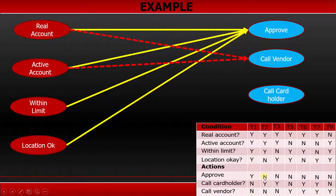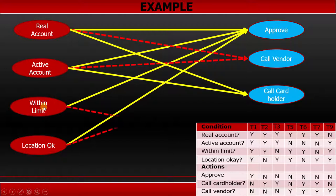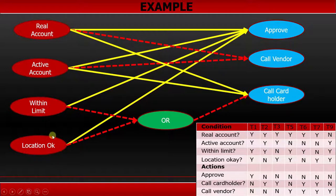And the last combination which is remaining is, if your account is real and if your account is active but you don't have the amount within limit and if you are not in the correct location, that means, or conditions, you are going to call the cardholder. So if you have a real account, active account but limit is not there or the location is not there, then you are going to call the cardholder.